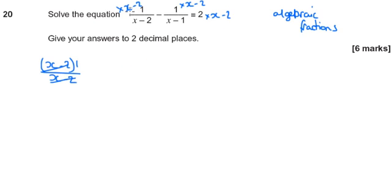So, even though that becomes 1, this will become 1 times x minus 2. So we've got the 1 from here, so I'll just write 1, minus 1 times x minus 2, or just x minus 2. Still divided by this x minus 1, that's not gone anywhere. And on the right hand side, we'll get 2 times by x minus 2.